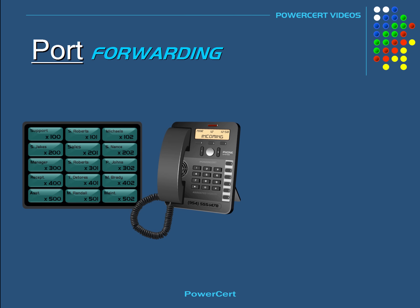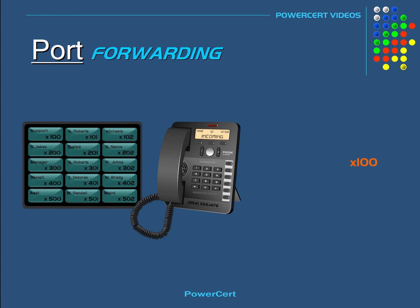Let's say another person calls the company and wants to talk to the support department. The call comes in and is received by the phone. The phone number has done its job, which was to send the call to the specific company from the outside. Once the call is received, the phone number is no longer needed because it's done its job. The only thing needed now is the extension, so the phone forwards the call to the support department based on the matching extension number.